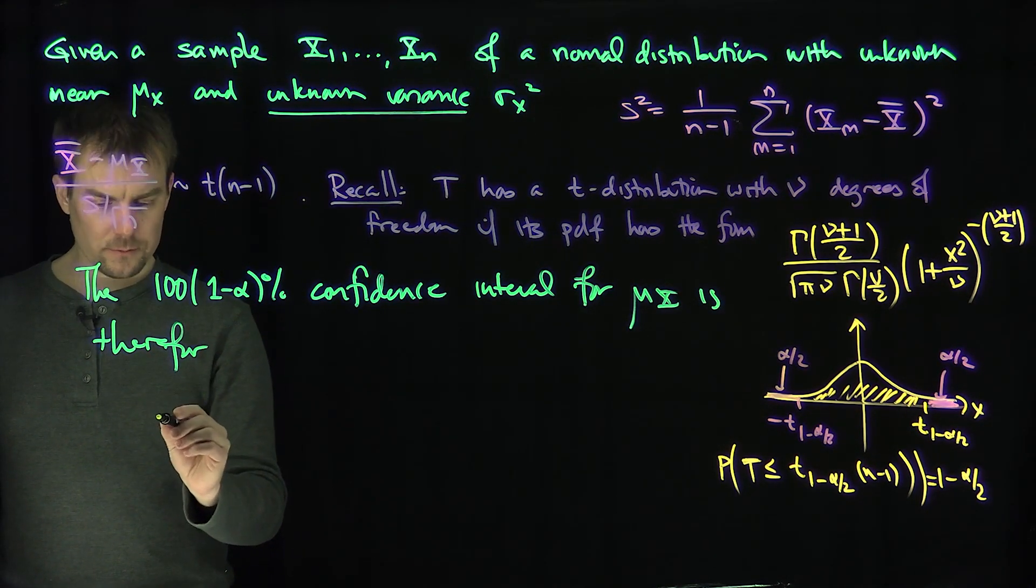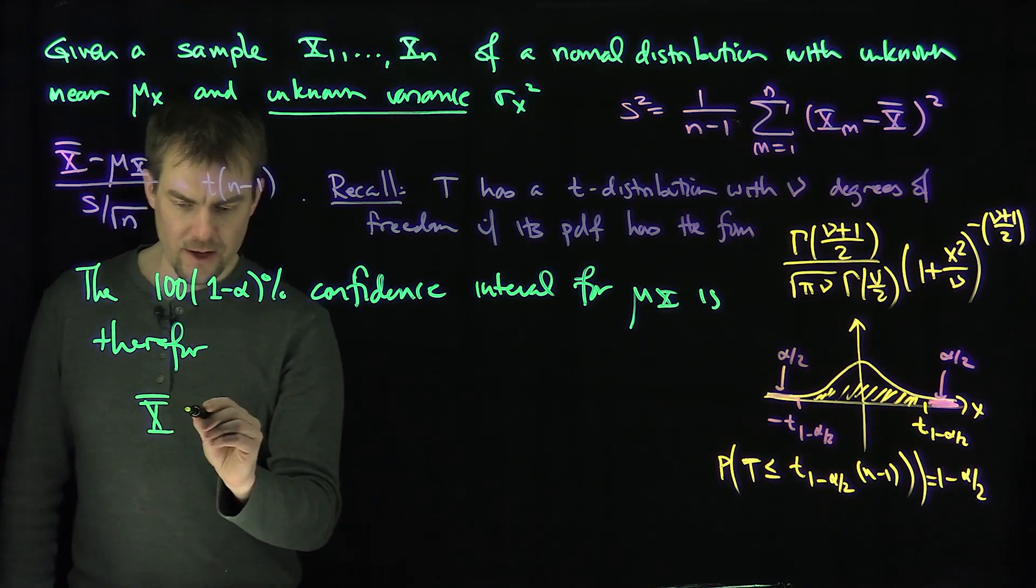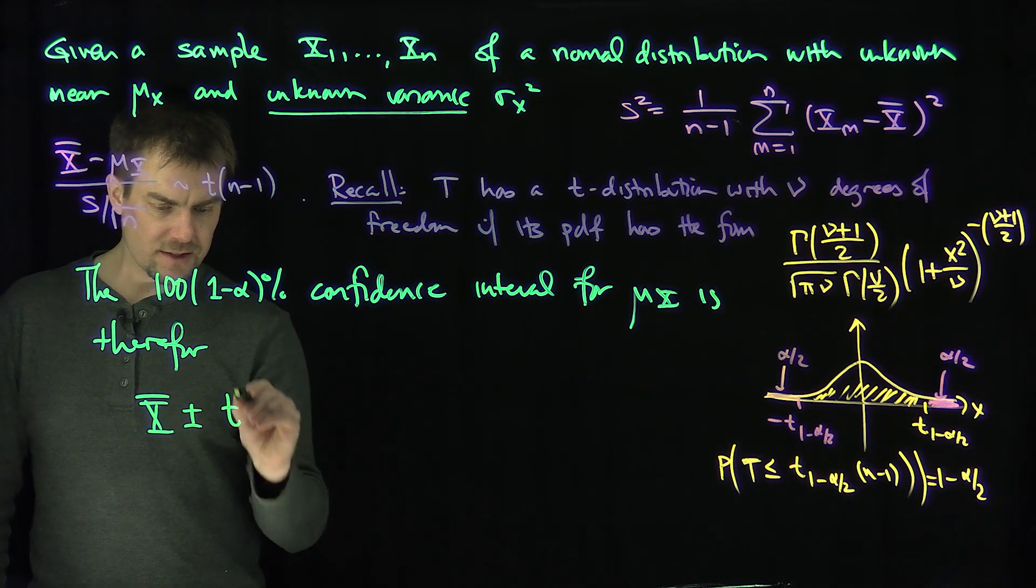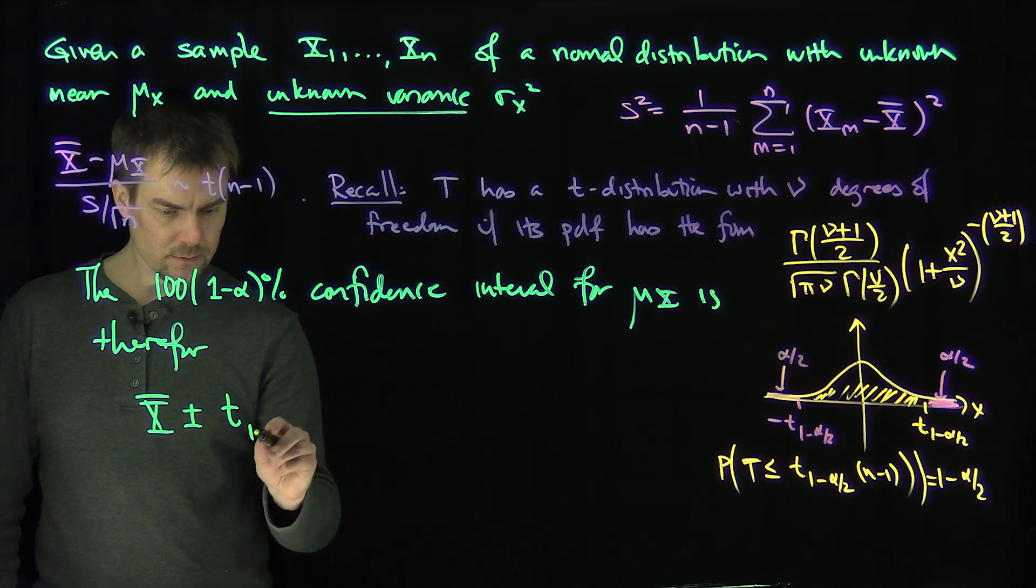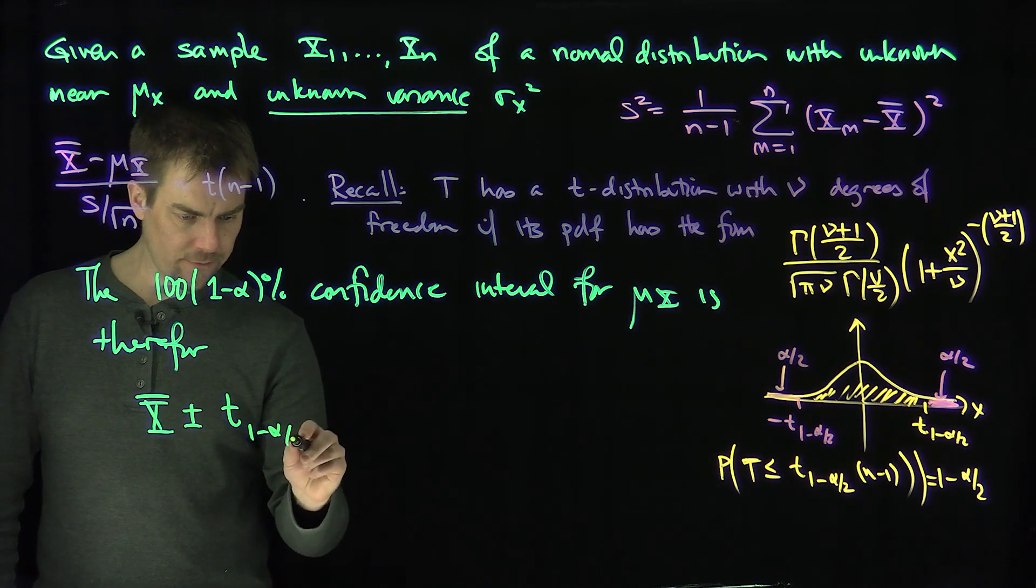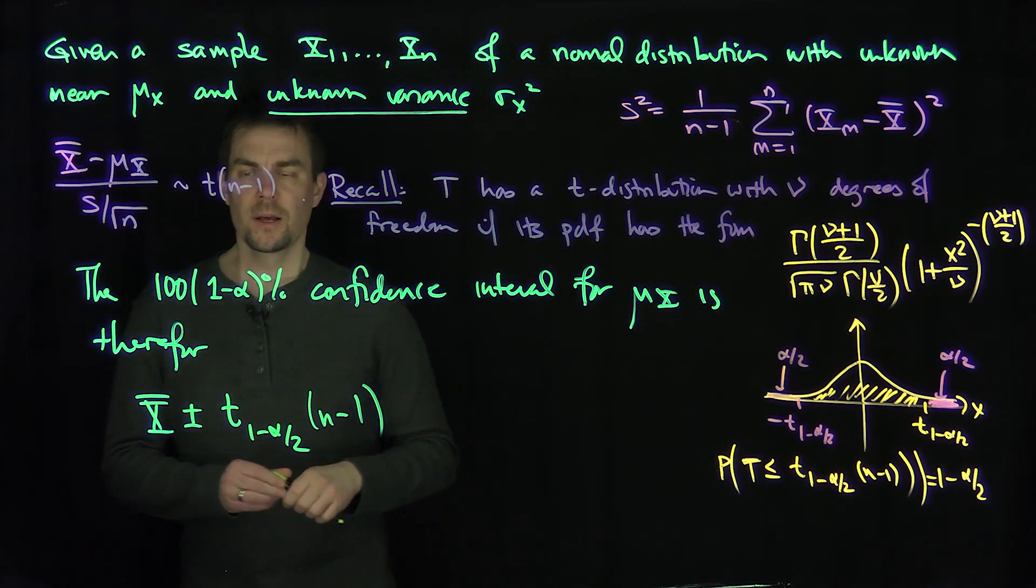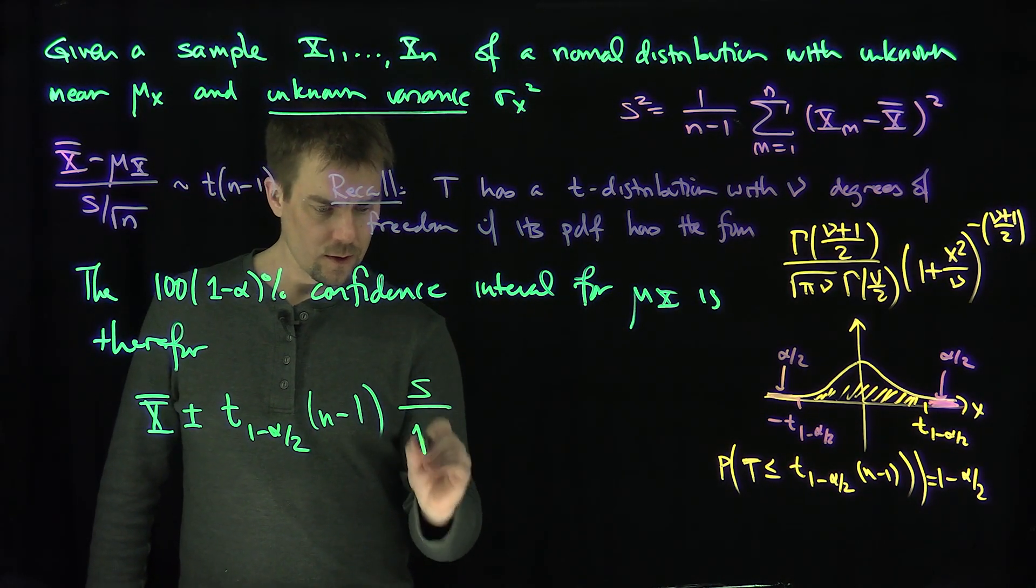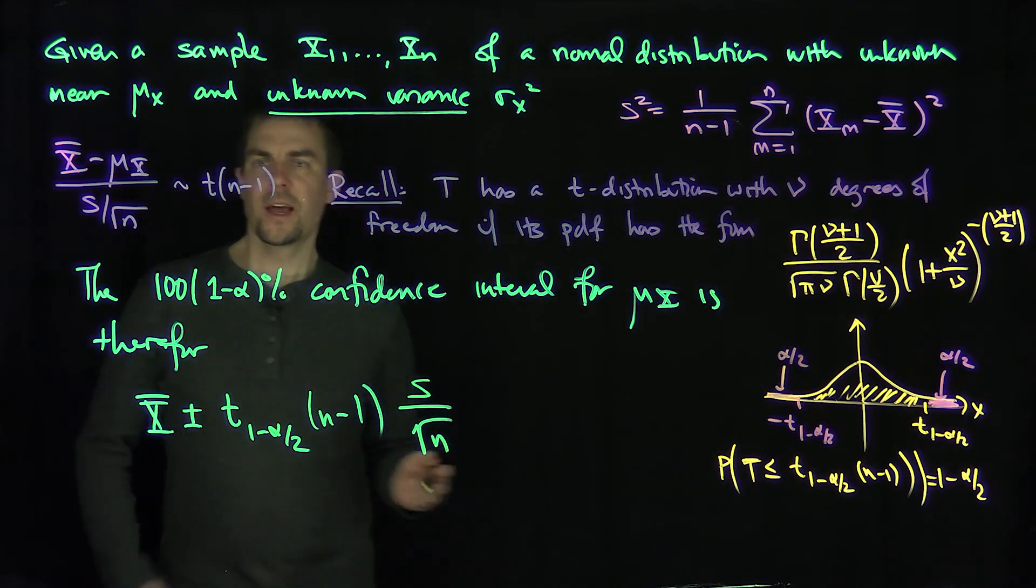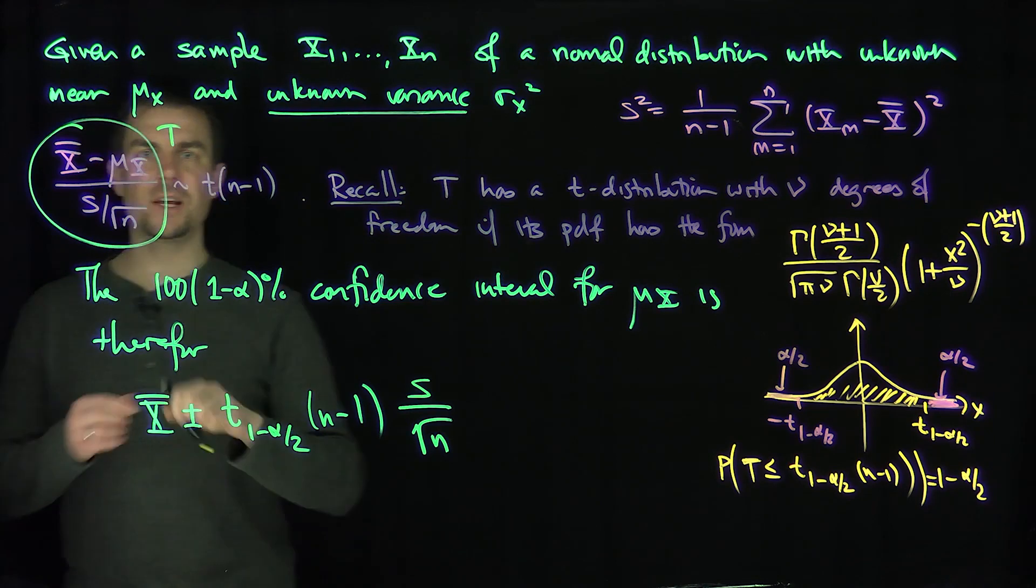Well, it's going to be what? It's going to be x bar plus or minus t of 1 minus alpha over 2 of n minus 1 degrees of freedom. And then what? Then I'm going to have this s over square root of n. And how do we see that? We call this thing over here, we call this t. So that's our t.